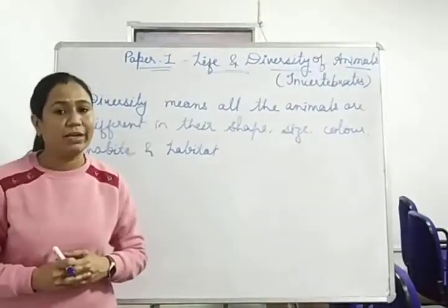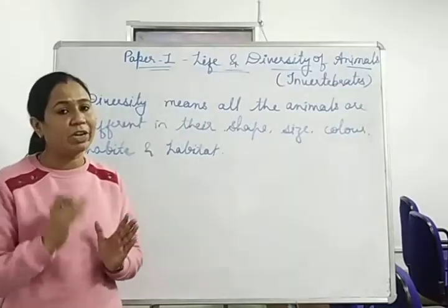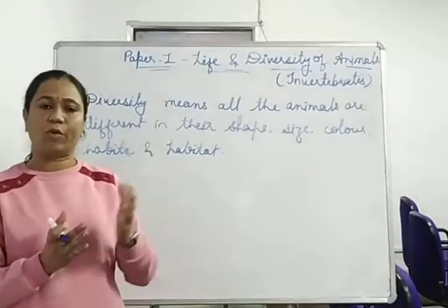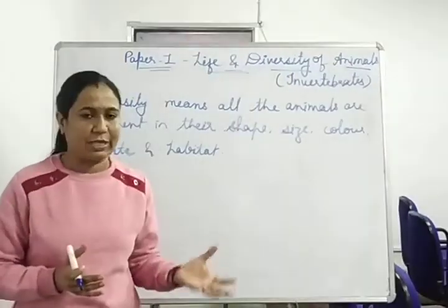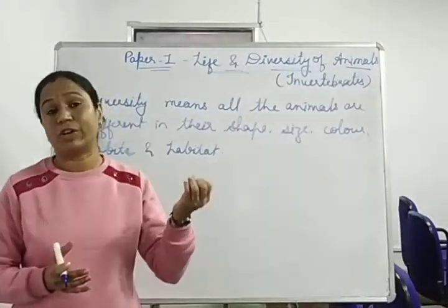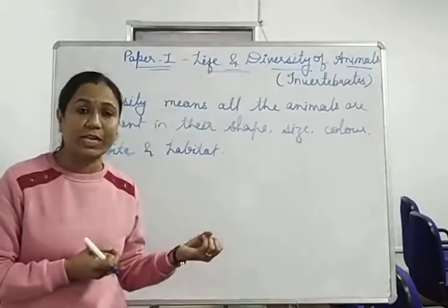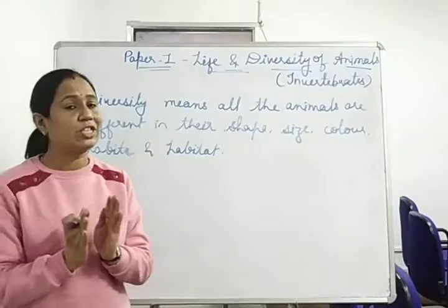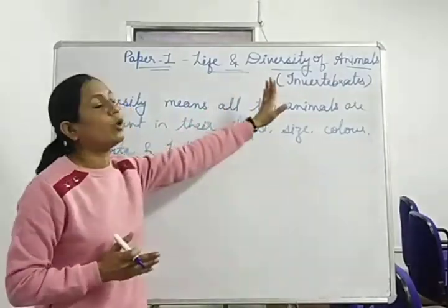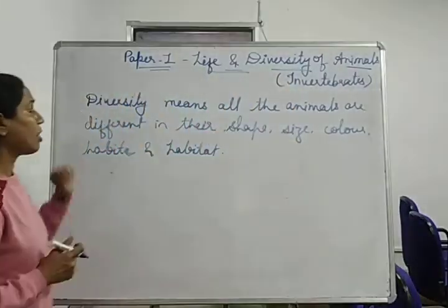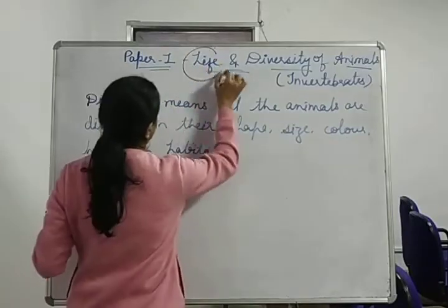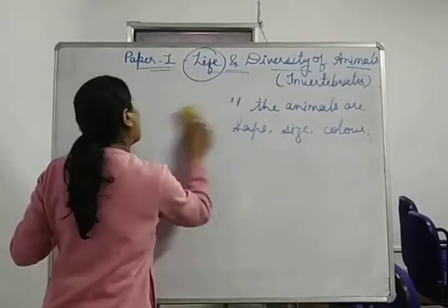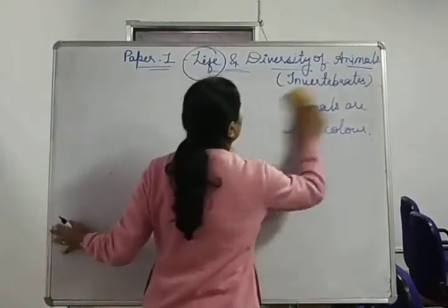Now we will relate to this paper with diversity. How will we relate to this paper? We will discuss all the invertebrate animals about the particular phylum — what kind of structure, function, morphology, where they are, physiology — we will discuss all the things about this paper. Then we will talk about life, that means how animals originate, and we will study that.